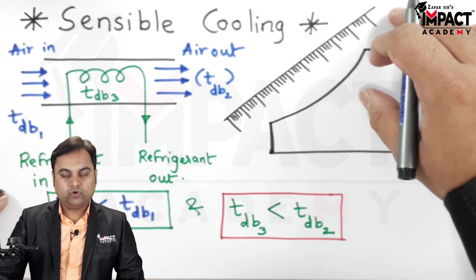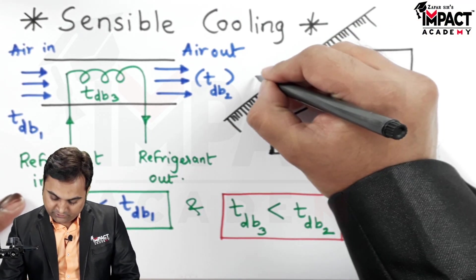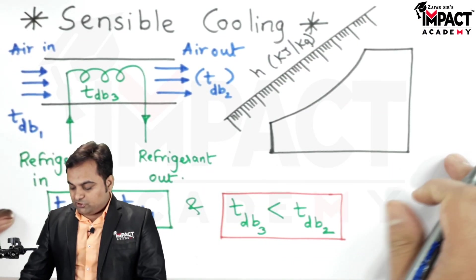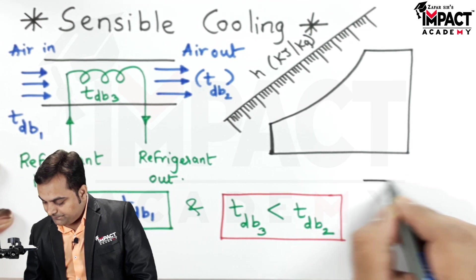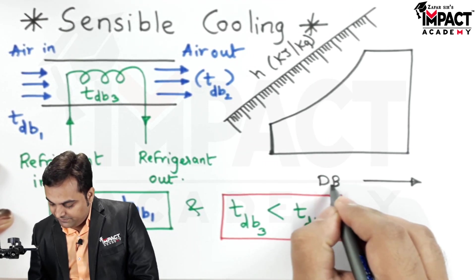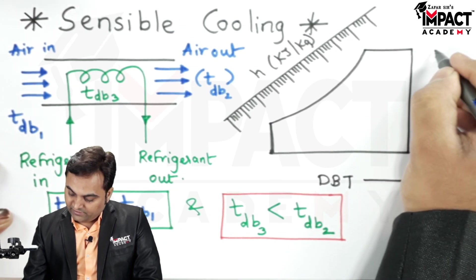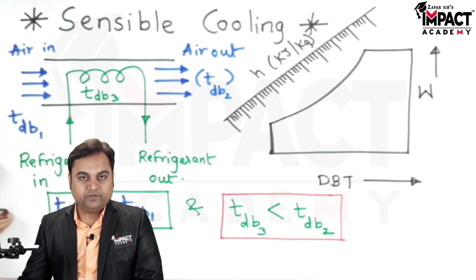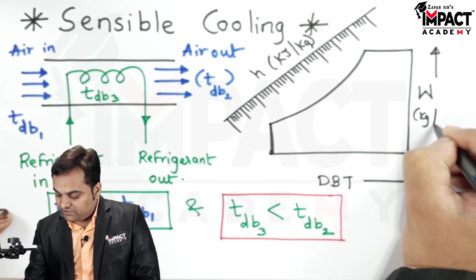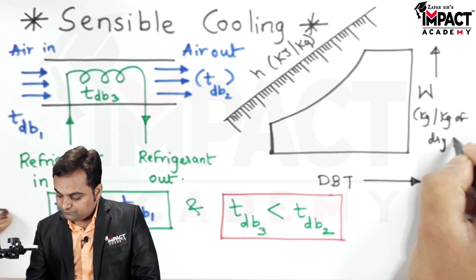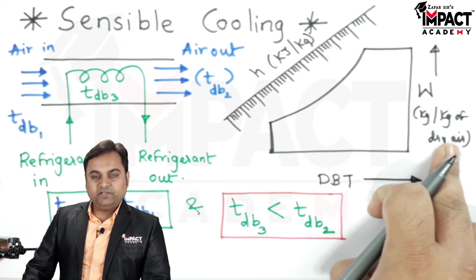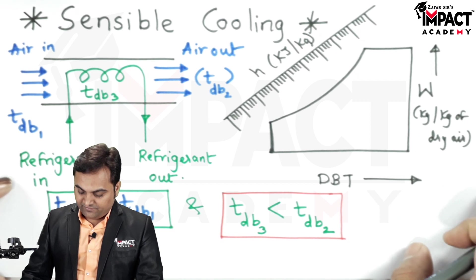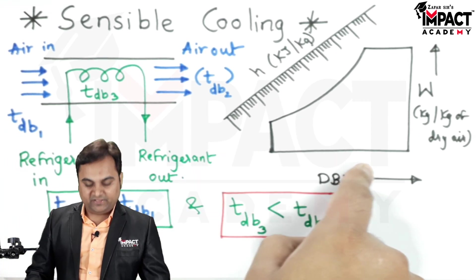So the scale which I have drawn would be indicating the specific enthalpy denoted by h and the unit is kilojoule per kg. On this horizontal line would be the dry bulb temperature denoted by DBT. Then this vertical line would indicate the specific humidity of air denoted by w, unit would be kg per kg of dry air. That is, in 1 kg of dry air how much kg of water vapor is present, that is indicated by the specific humidity. Now to explain this process on the psychrometric chart.